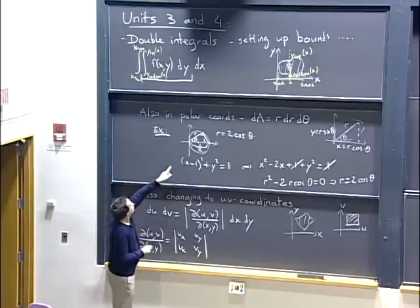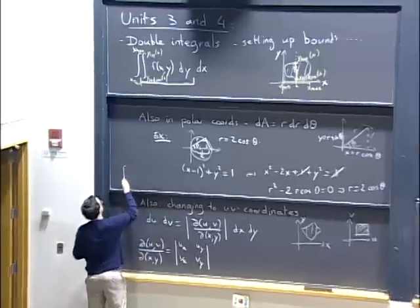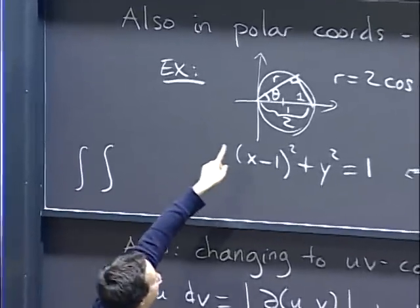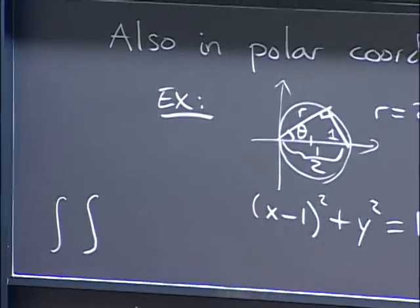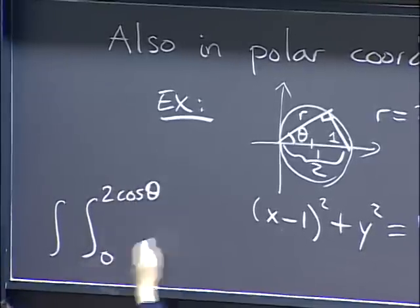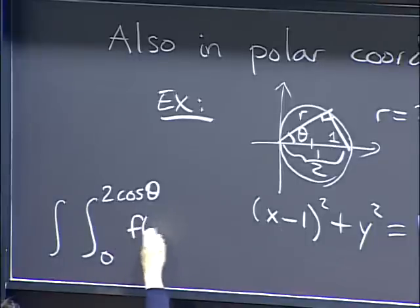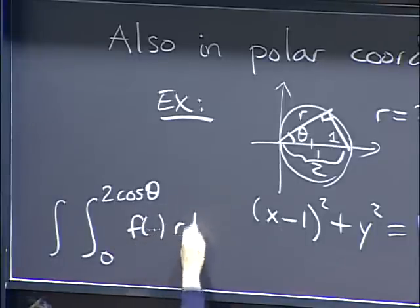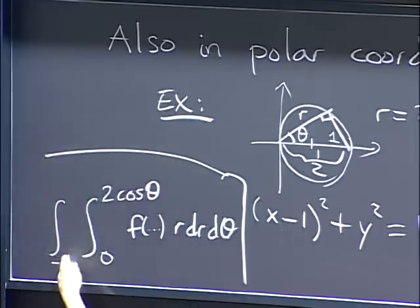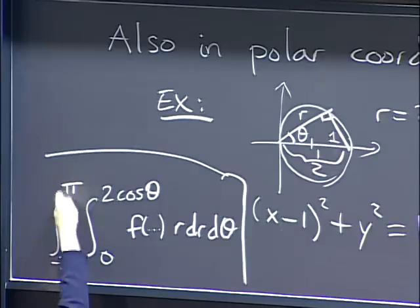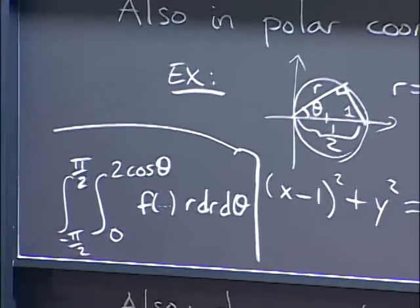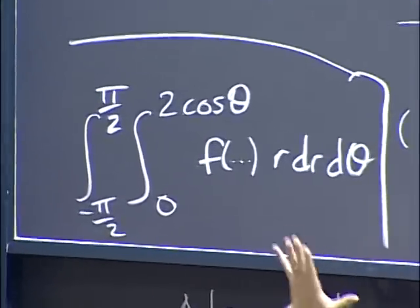For the circle r = 2cosθ in polar coordinates, r goes from 0 to 2cosθ for a fixed θ, and the bounds on θ go from −π/2 to π/2.